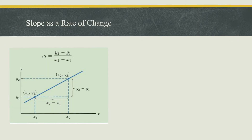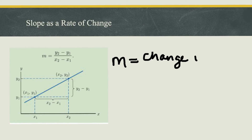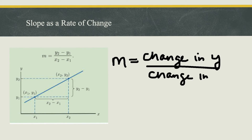One of the most important things about slope as it relates to calculus is that it's considered a rate of change. When we calculated slope as y2 minus y1 all over x2 minus x1, another way to phrase that is the change in y over the change in x. So as x changes from x1 to x2, y is changing from y1 to y2 — the line is changing at a rate of m. For linear functions, the rate of change is their slope, and that has many important applications.